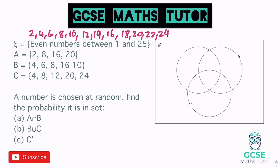Starting with numbers in all three sets: I can see 8 is in all of them, so we put 8 in the middle and cross it off the main list. No others appear in all three. In A and B there's a 16 — cross that off and place it in the A∩B region. In B and C there's a 4 — place that in the B∩C crossover. In A and C there's a 20 — place that in the A∩C crossover. Cross off 20, 4 from the main list.